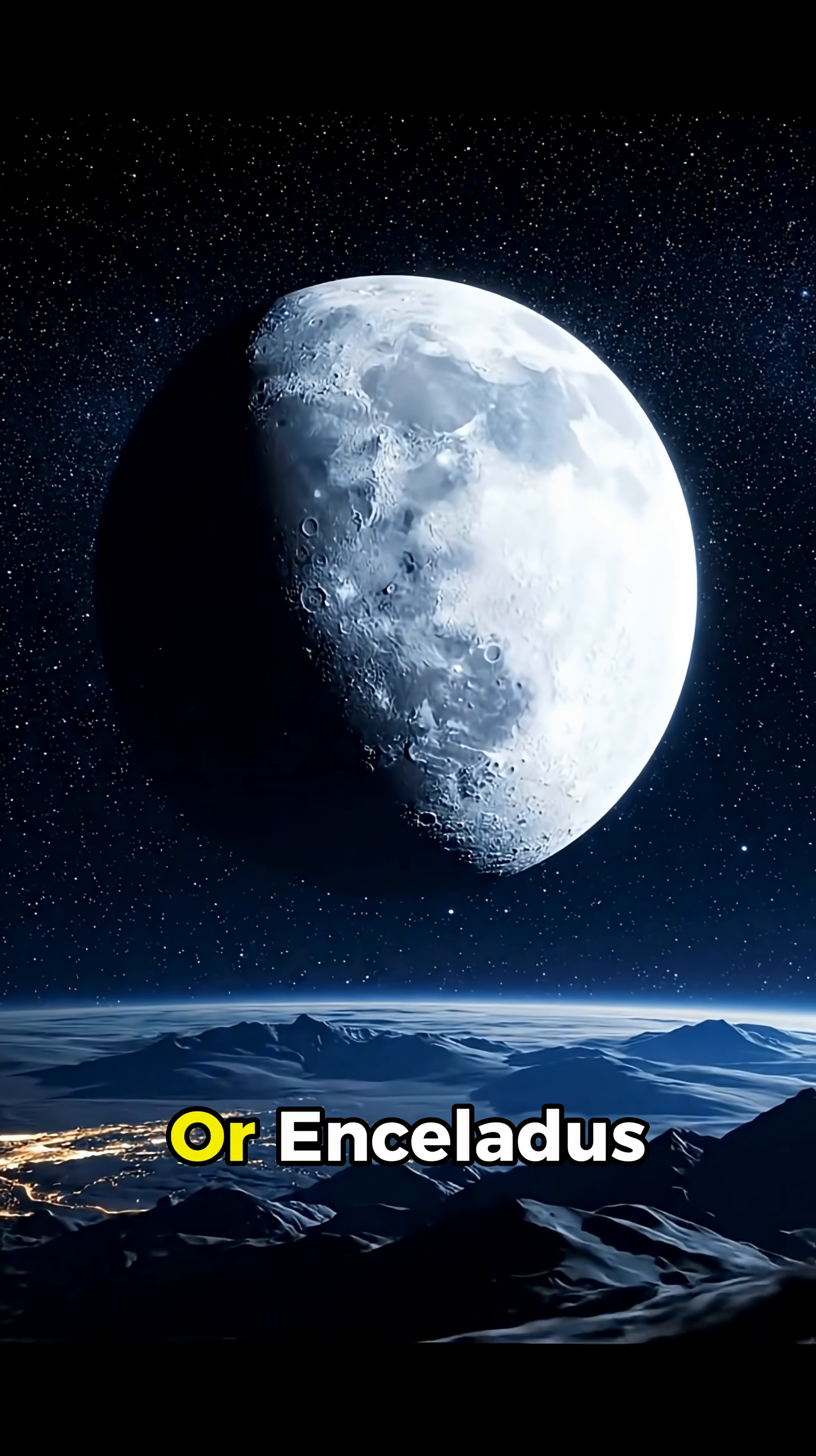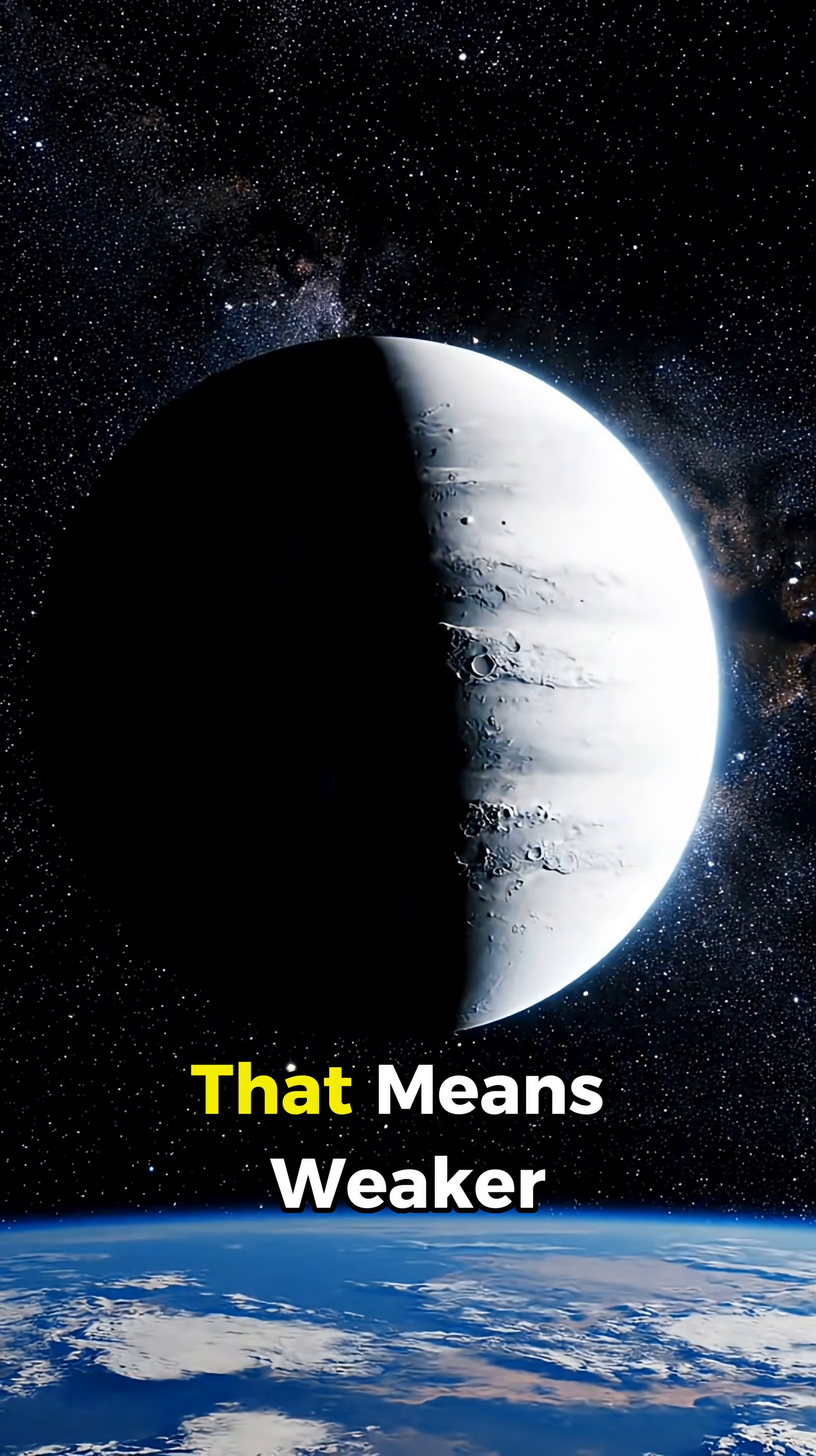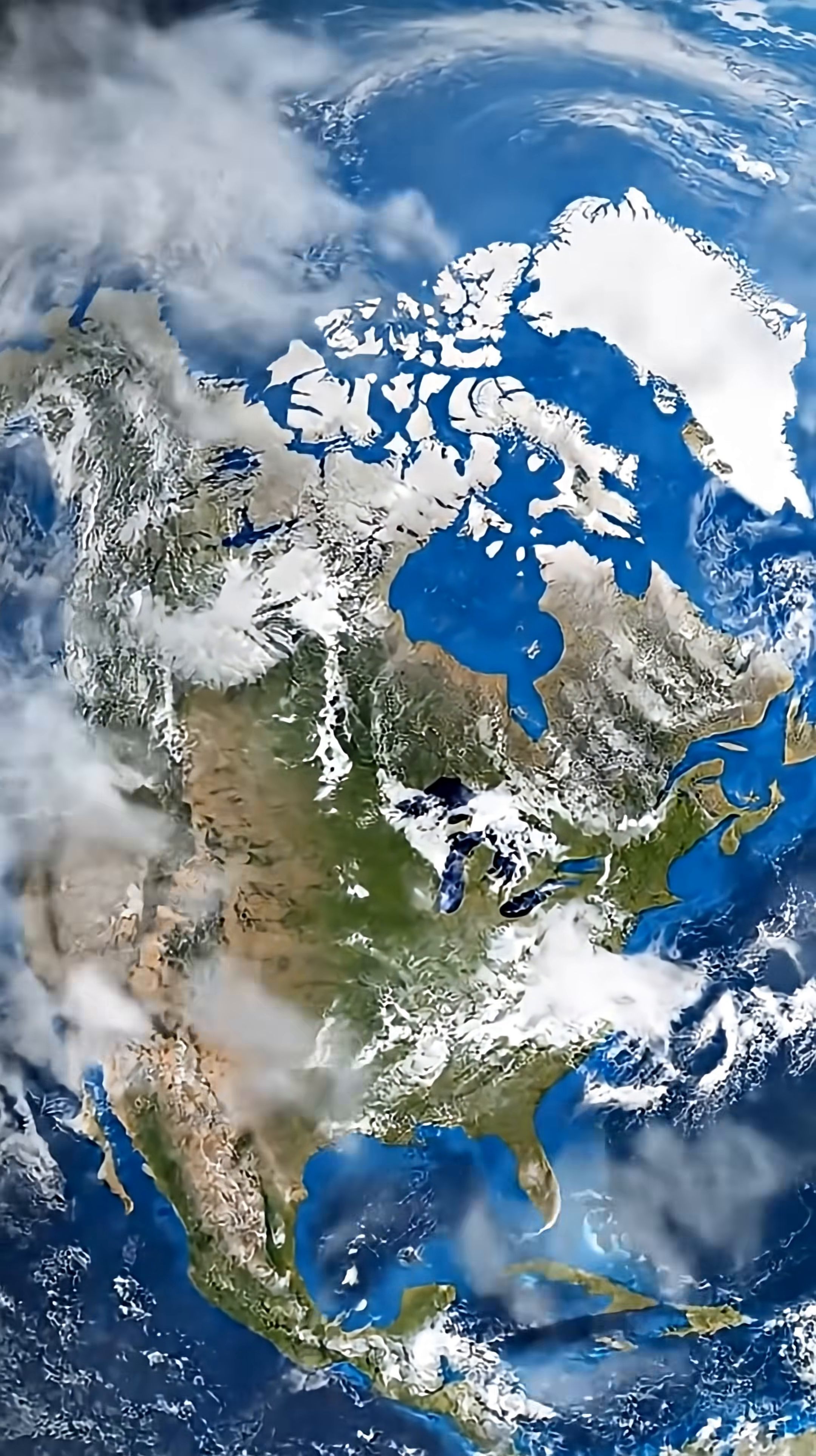Swap in Europa or Enceladus, and the night sky would turn bright and icy white. These moons reflect a lot of light, but they're much lighter than our moon. That means weaker tides. Over long periods, Earth's axis would become unstable, causing extreme climate shifts, brutal ice ages followed by intense warming.